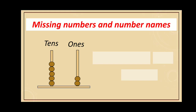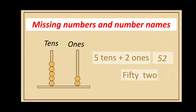Missing numbers and number names. Here is an abacus having tens and ones rods. Let's count the beads on ones first: one, two. Let's count the beads on tens: one, two, three, four, five. So five tens plus two ones makes the number 52. And the number name is fifty-two — F-I-F-T-Y-T-W-O.